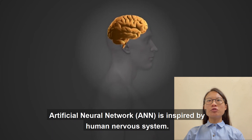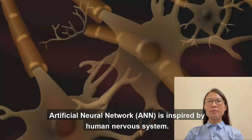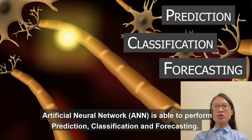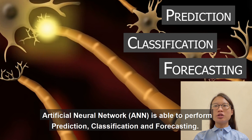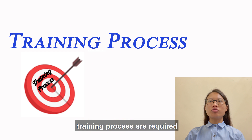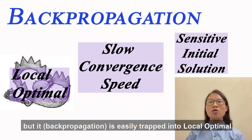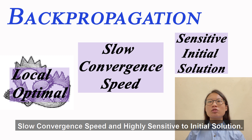Artificial neural network, ANN, is inspired by a human nervous system. ANN is able to perform prediction, classification and forecasting. Before deploying an ANN model, a training process is required. Backpropagation is most commonly used to train ANN models, but it is easily trapped into local optima, has slow convergence speed, and is highly sensitive to initial solutions.